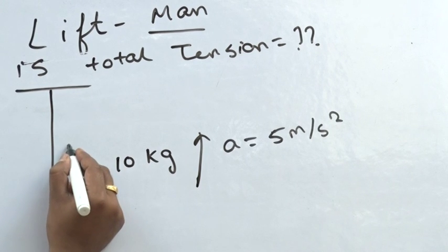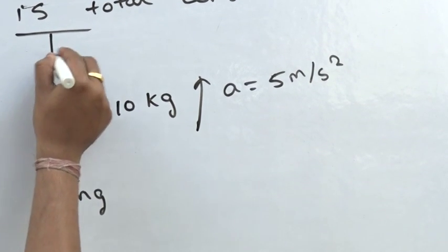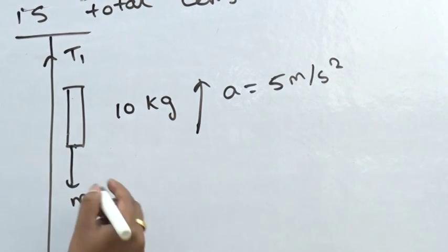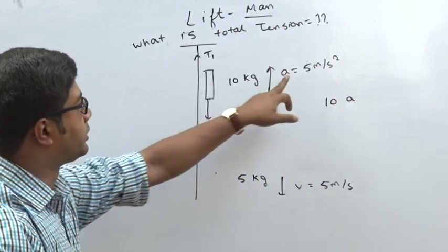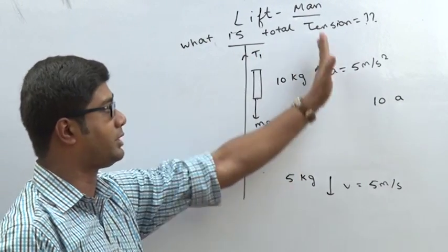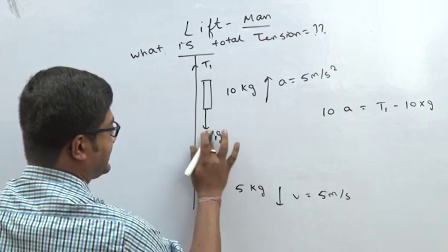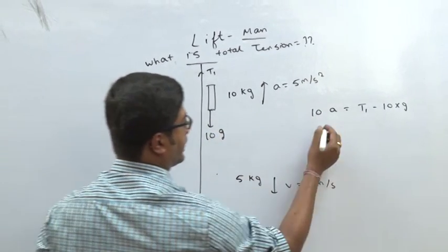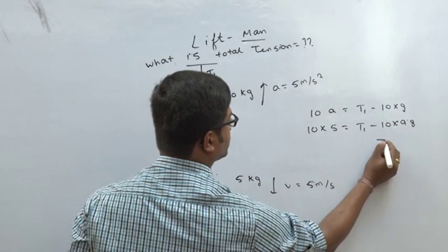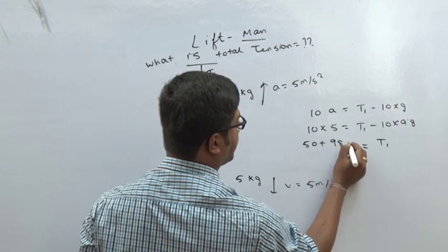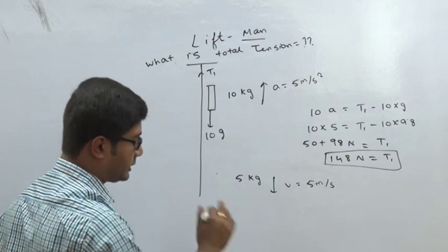For the first man: downward is M1·g, upward is T1, and acceleration is upward at 5 m/s². Since acceleration is upward, T1 is greater than M1·g: T1 minus 10g = 10 × 5. So T1 = 50 + 98 = 148 N. That is the tension for the first man.